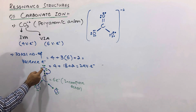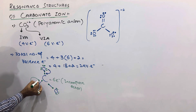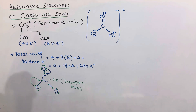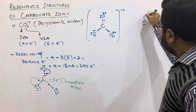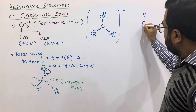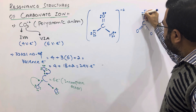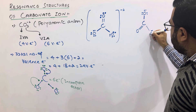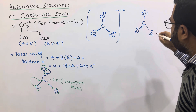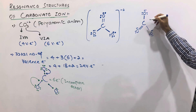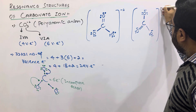It can also happen that the lone pair is not shared by that oxygen. Rather, a second oxygen shares its lone pair with carbon. This is the second possibility, giving a structure of C single bond O, C double bond O, and C single bond O. The two single-bonded oxygens have 3 lone pairs each, and the double-bonded oxygen has 2 lone pairs. Again, the formal charge on each single-bonded oxygen is minus 1, giving an overall charge of minus 2.